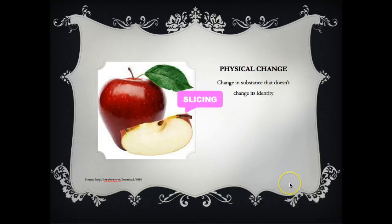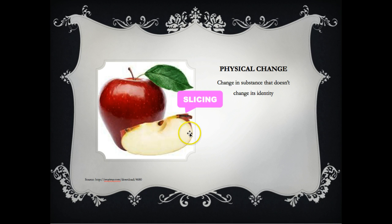A physical change is only a change in the substance's shape or form; however, you will not see a change in the identity of the substance. So if we slice the apple, we still have an apple.